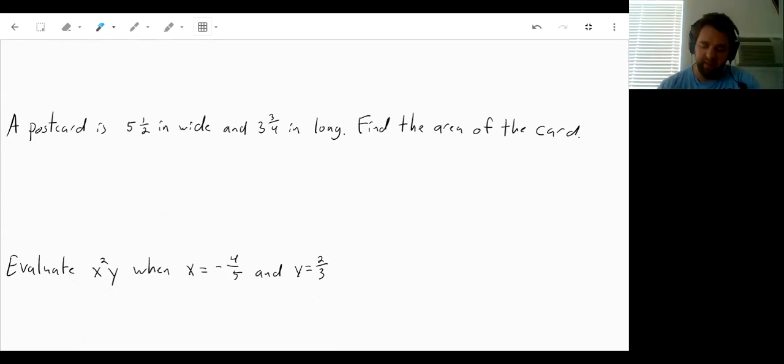This is one reason why math people don't like mixed numbers. They'd rather have improper fractions as you get to higher levels of math because when you're multiplying mixed numbers, you have to get them into improper fractions first. So 5 and 1 half as an improper fraction, 5 times 2 is 10 plus 1 is 11. So we'd have 11 halves and 3 times 4 is 12 plus 3 is 15. So 15 fourths.